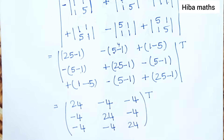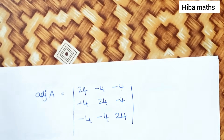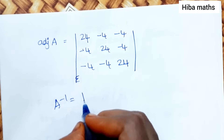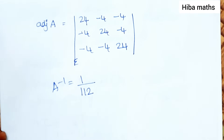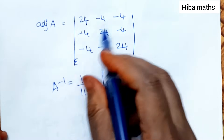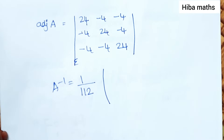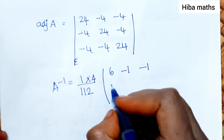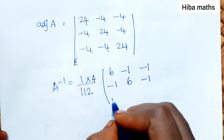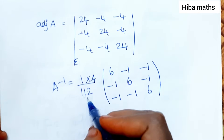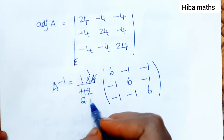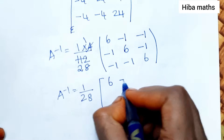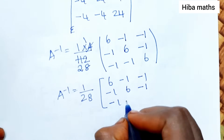The adjoint of A value is obtained. There is no change in the transpose. A inverse equals 1 by modulus of A. The modulus is 112 into 24 equals... After cancellation, the final answer is: A inverse equals 1/28 times [6, -1, -1; -1, 6, -1; -1, -1, 6]. Understand? Now the third subdivision.